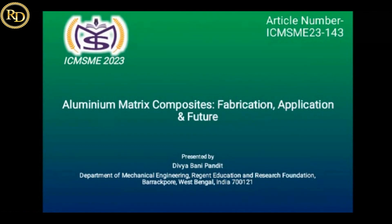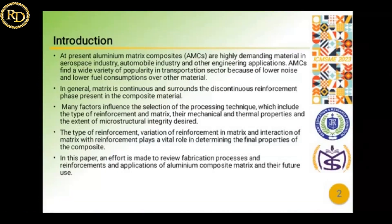Good evening everyone. I am going to present a review paper on aluminum matrix composites, its fabrication, application, and future uses. At present, aluminum matrix composites are highly demanding materials, widely used in the aerospace industry, automobile industry, and many other manufacturing industries. In general, the matrix is continuous and surrounds the discontinuous reinforcement phases.